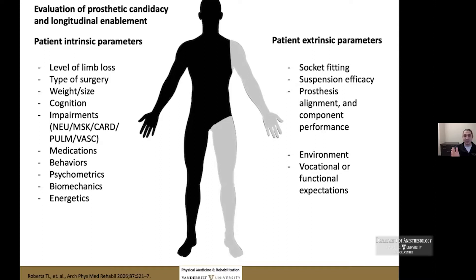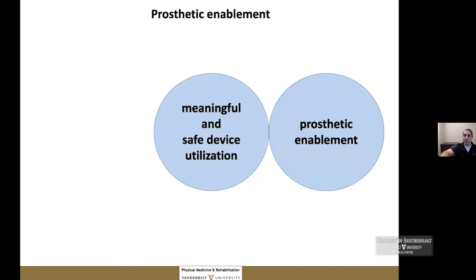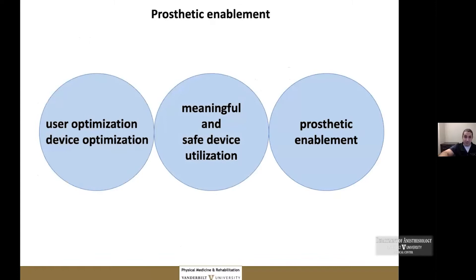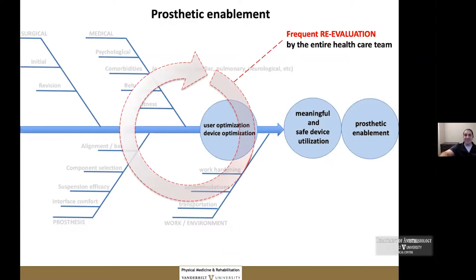Prosthetic enablement means working toward safe and meaningful device utilization, which requires optimizing the user and the device. Working backwards: proper surgery, proper revision surgery if needed, co-management and interdisciplinary coordination of care for psychological conditions, comorbidities, and behavioral aspects of medical fitness. Work hardening, accommodations, and transportation considerations are constantly reevaluated by the entire health team.